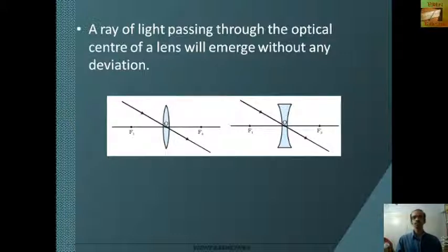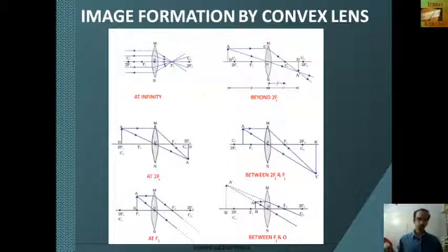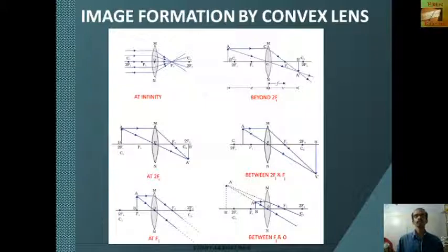Using these principles, we can show the image formation using ray diagrams. First, we can see the image formation by convex lens. These are the different image formations when the object is kept at different positions. The first case is when the object is at infinity — in this case, the light rays are parallel to the principal axis and an image is formed at focus F2. The image formed is highly diminished or point sized.